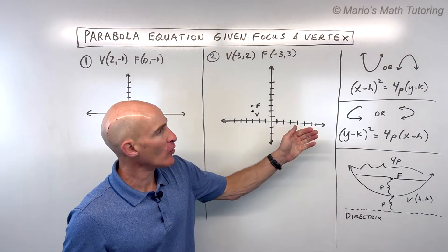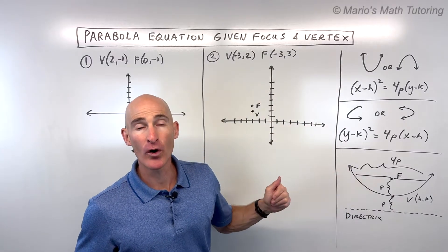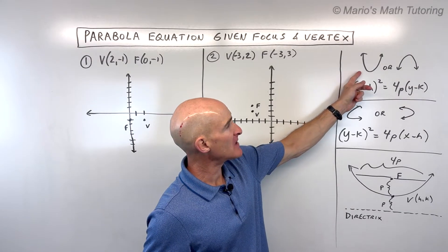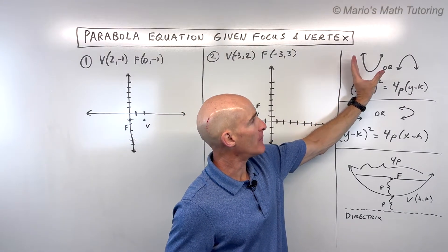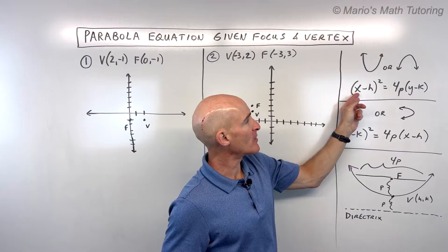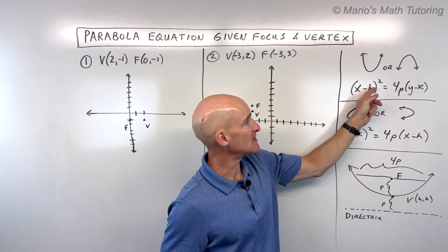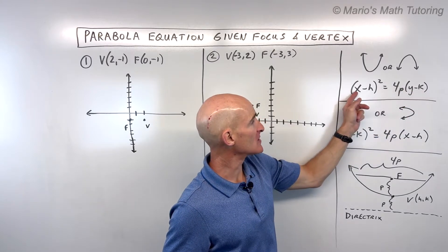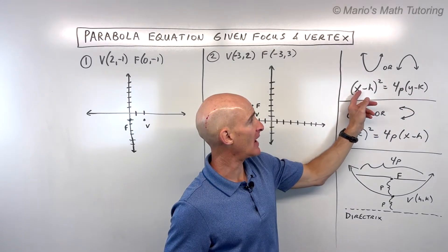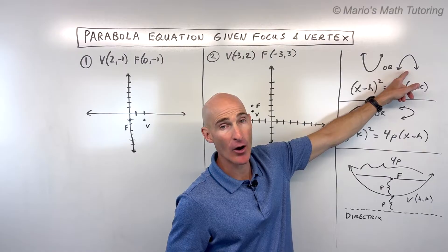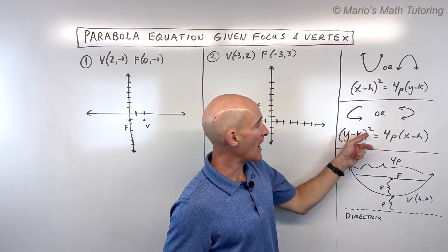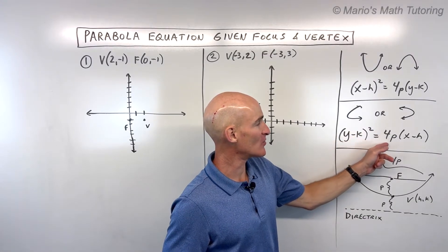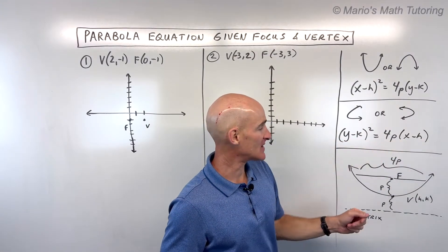The first thing we want to go through is the basic form of the parabola when you're using the focus and the vertex. You want to pay attention to whether the parabola is opening up or down. If it opens up or down, it's going to be in this form: x minus h squared equals 4p times y minus k. Notice it's the x term that's squared when it opens up or down. If it opens to the right or the left, it's going to be the y term that's squared: y minus k squared equals 4p times x minus h.